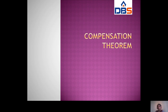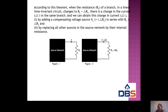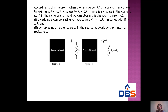Next is the compensation theorem. If a branch in a linear network has resistance RL which changes to RL + ΔR, there will be a corresponding change in the current from I to I + ΔI. We can obtain this change in current ΔI by adding a compensating voltage source VC = I × ΔR in series with RL + ΔR, replacing all other sources with their internal resistances.